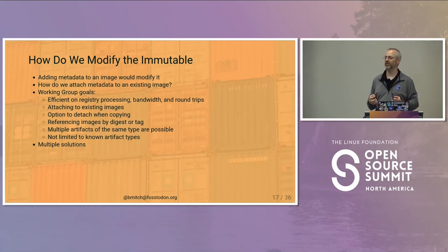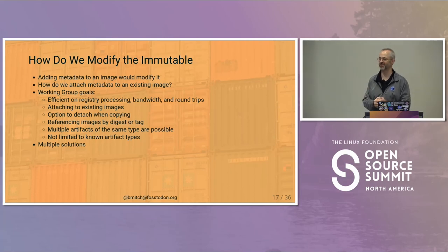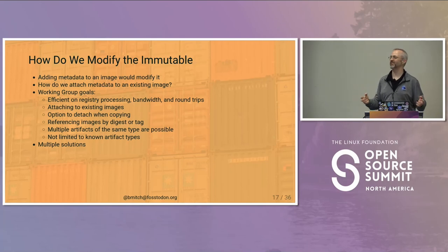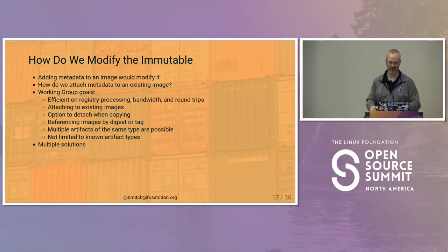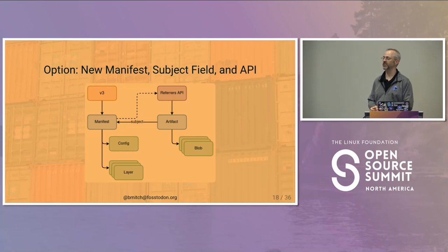We also admitted we didn't know what people are going to use this for later on. Today people use it for SBOM signatures; tomorrow people might want to attach cute animal pictures to their images. We don't know, so we don't want to build a distinct set of use cases — we want to keep this very flexible. The good news is we weren't working from an empty box. We had a whole bunch of solutions already out there and people were already doing this today.